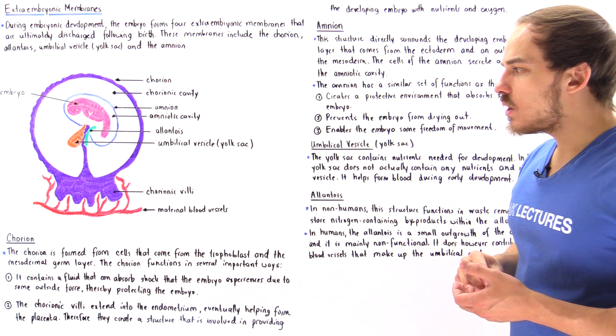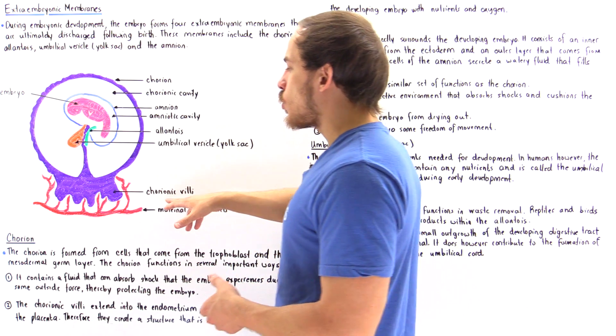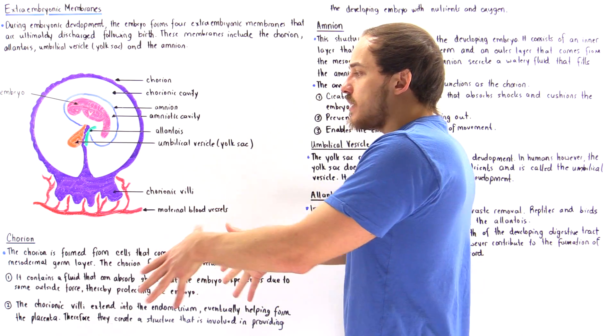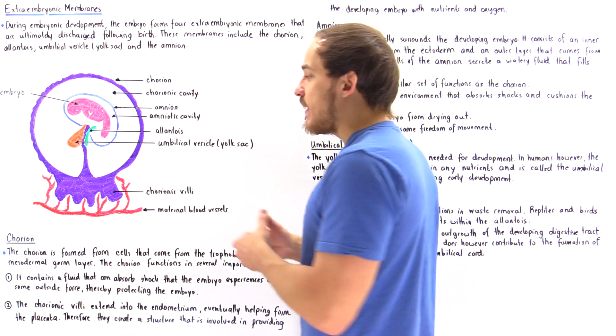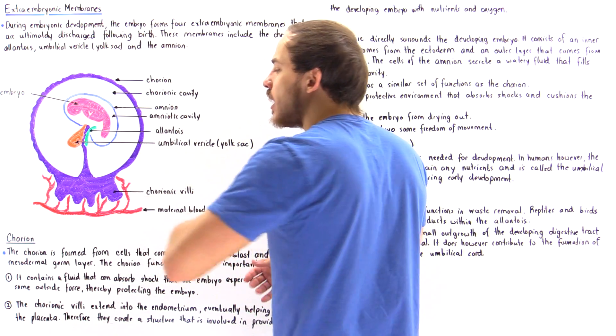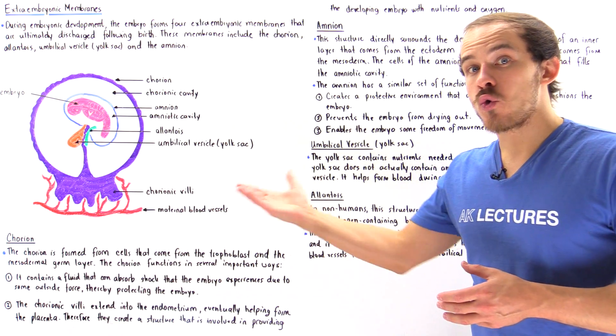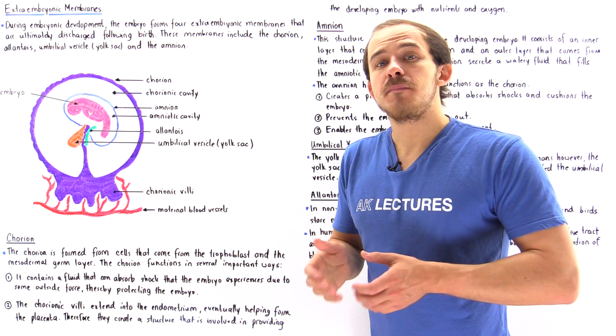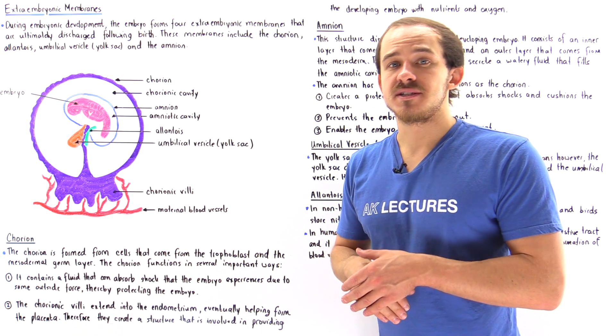Now the second function of the chorion is to create these chorionic extensions. And these chorionic extensions permeate through the endometrium and eventually they connect with the blood vessels of that female individual. And the chorion, these chorionic extensions eventually develop into a structure known as the placenta.